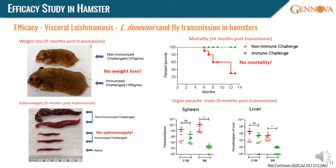We have demonstrated the efficacy of the Centrin knockout Leishmania donovani parasite vaccine candidate using a sandfly challenge model in hamsters, in terms of mortality, weight loss, and parasite load. Very clearly, in the case of immunized hamsters, there is no splenomegaly after parasite challenge, which is specific to visceral Leishmaniasis.